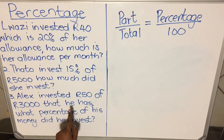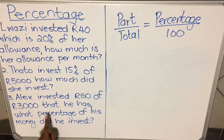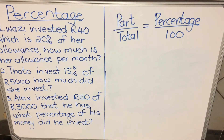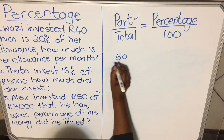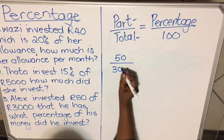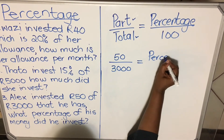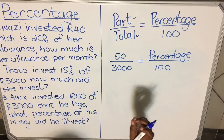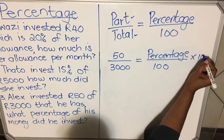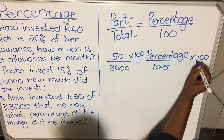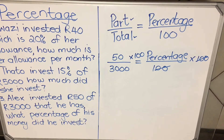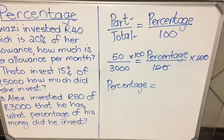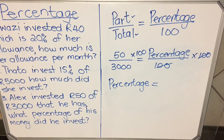Now the last question: Alex invested 50 rand of the 3000 he has. What percentage of his money did he invest? In this question we want the percentage. We have the part, which is 50 rand, and the total, which is 3000. So: 50 divided by 3000 equals percentage divided by 100. You don't need to cross multiply here — just multiply both sides by 100, the 100 cancels, and percentage equals 50 times 100 divided by 3000.